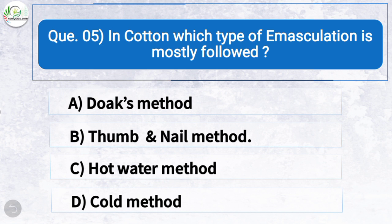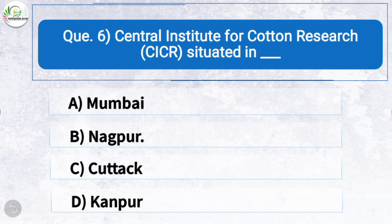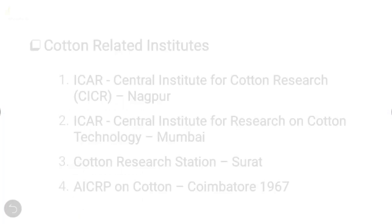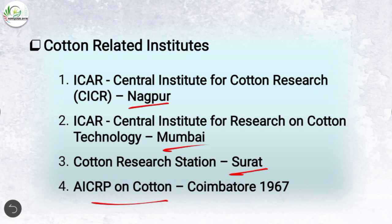Question five: In cotton, which type of emasculation is mostly followed? The correct answer is option B: thumb and nail method. Question six: Central Institute for Cotton Research (CICR) is situated in — the correct answer is option B: Nagpur. CICR is situated in Nagpur. ICAR Central Institute for Cotton Research is in Nagpur; ICAR Central Institute for Research on Cotton Technology is in Mumbai; Cotton Research Station is in Surat; and AICRP on Cotton, located in Coimbatore, started in 1967.